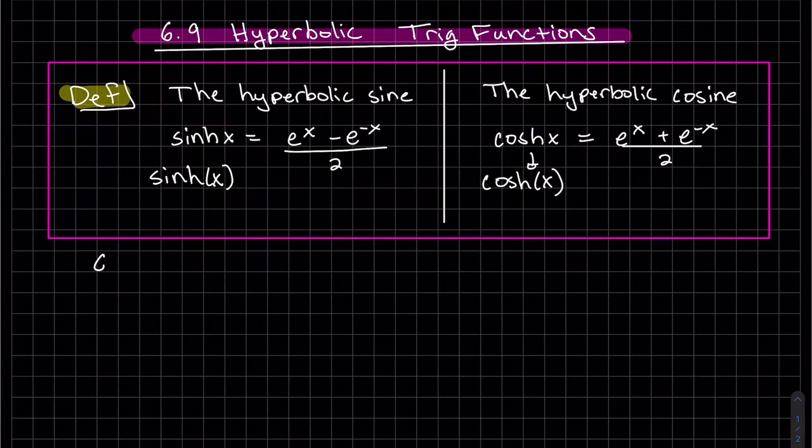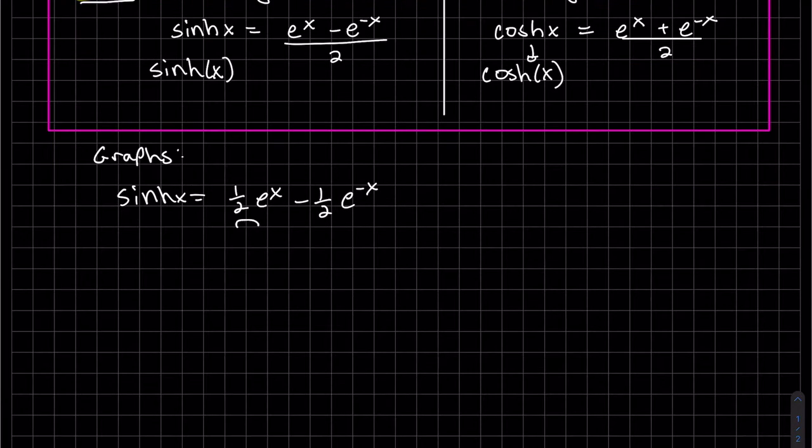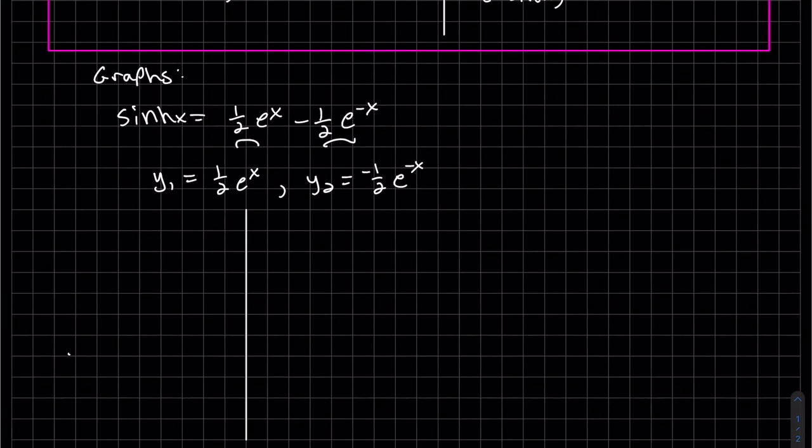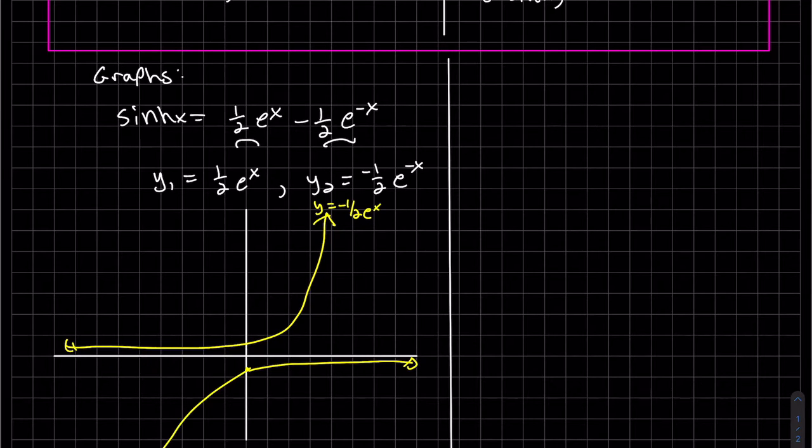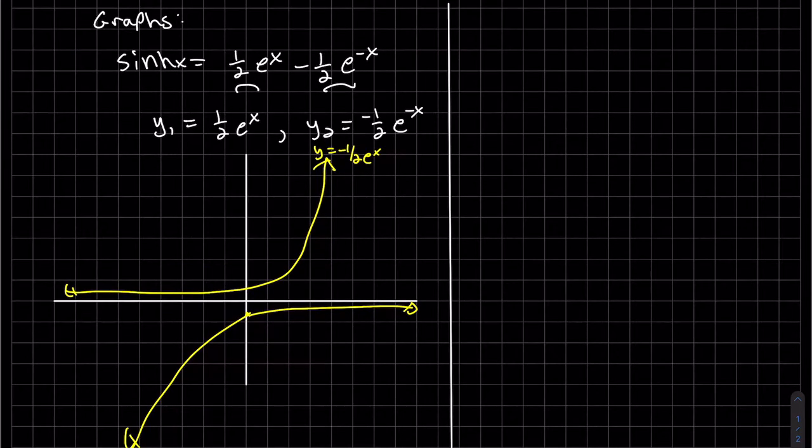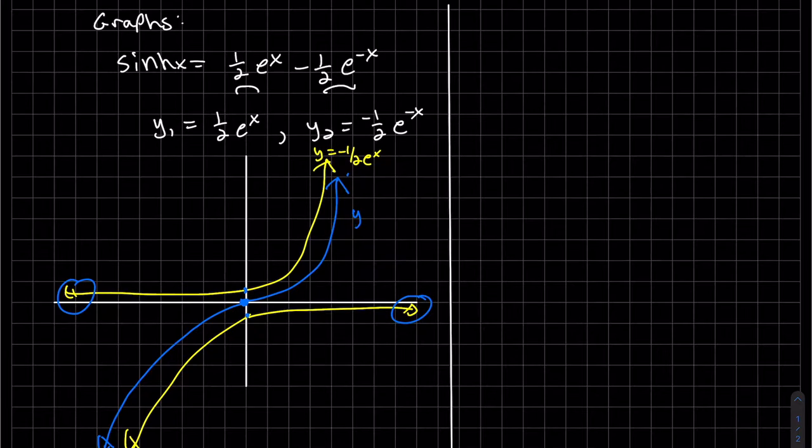I'm going to sketch them. So basically, we're going to be adding these two functions together. Let's graph both of those. So this one's reflected about the x and the y, and then adding these two functions up. One's positive one half, one's negative one half. We have an asymptote here at zero, so we're adding zero to this, so it's going to be going up. And we have an asymptote at zero; we're essentially adding zero to this other function. And there's sinh x, the graph of sinh x.